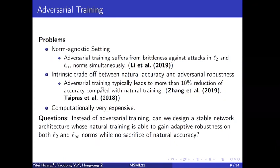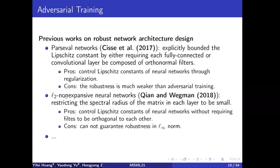There are some previous works on robust network architecture design, such as the parseval network and L2-nonexpansive neural networks. Both of those works try to control the Lipschitz constant of the network. However, the robustness achieved is much weaker than adversarial training.